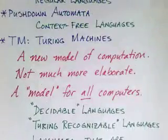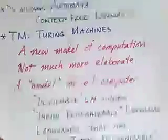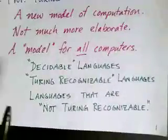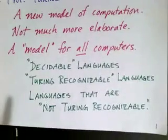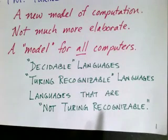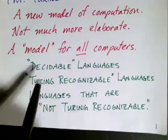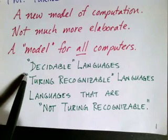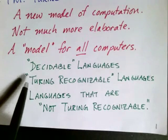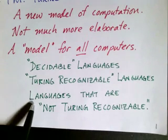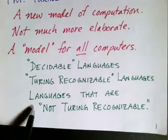In fact, we are going to talk about three new classes of languages that are defined by the Turing machine concept: decidable languages, Turing recognizable languages, and languages that are not even Turing recognizable.